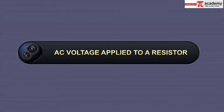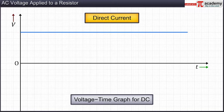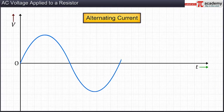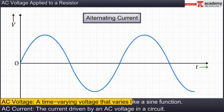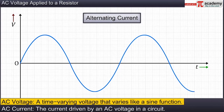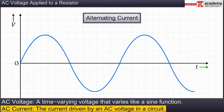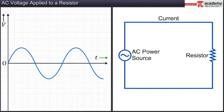In this module you will be introduced to alternating current. We studied direct current earlier — direct current does not change direction with time. However, most appliances in our daily lives run on voltages and currents that vary with time. A time-varying voltage that varies like a sine function is called alternating voltage or AC voltage, and the current driven by it is called alternating current or AC current. The term AC is universally used to refer to any electrical quantity that varies with time, just like simple harmonic motion related by a sine or cosine to time.